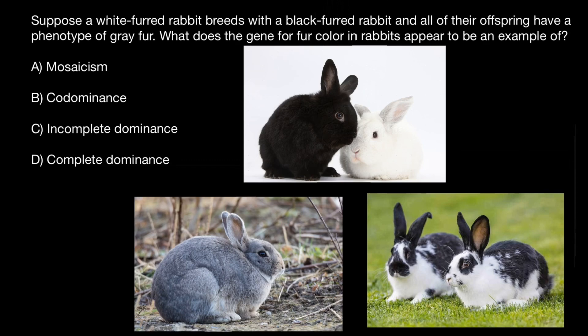And this is answer C. Now, what is complete dominance? Complete dominance would be when the progeny of this couple would be either black or white. In this case, we can say that black is completely dominant over white, or vice versa.